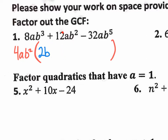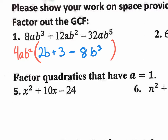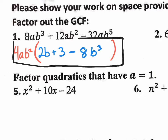Then 4AB² times what will get us 12AB²? 4 times positive 3 gets us positive 12. A times 1 is just A, and B² times 1 is just B², so the middle term is just the number 3. At the very end, 4 times what gets us negative 32? 4 times negative 8. B² times what will get you B to the fifth? That would be B to the third. So the third term inside the parentheses is negative 8B³. And that is our final factored form on number 1.